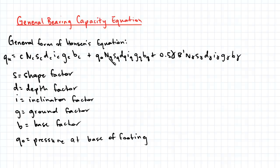For example, shape factors to account for the shape of the footing, depth factors to account for the depth of the footing below the surface of the ground, inclination factors to account for loads acting on an angle other than perpendicularly to the footing, ground factors to account for the slope of the ground, and finally, base factors to account for when the footing has an inclined base.